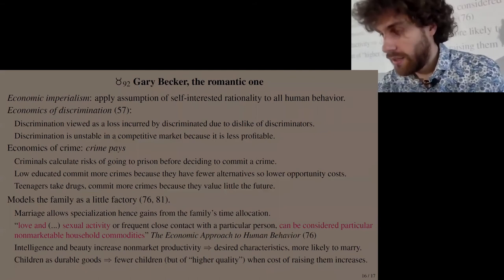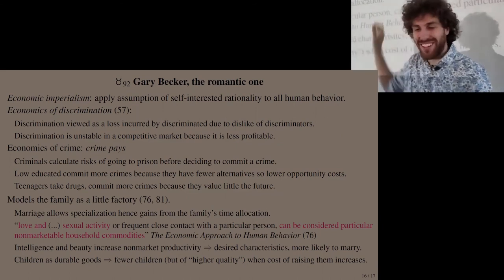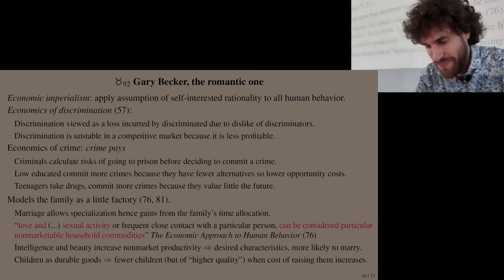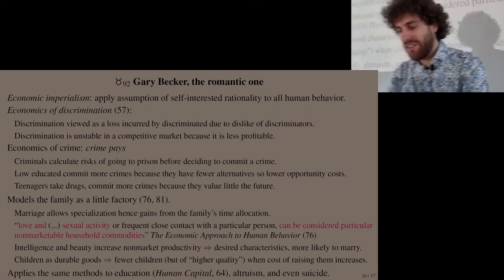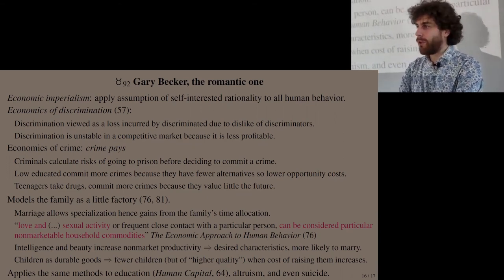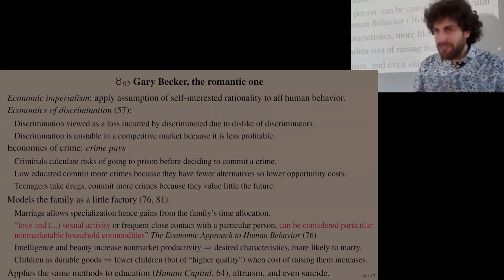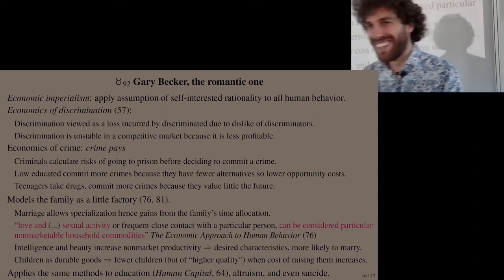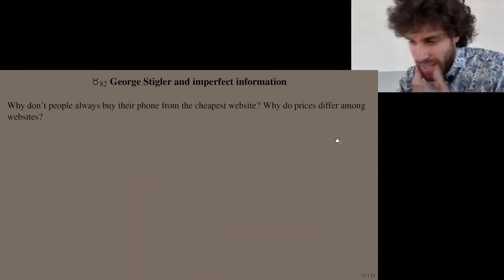A student asks: what did Becker specifically get the Nobel Prize for? He got it for all of this together — the economics of discrimination, crime, the family, education, altruism, and even suicide. A warning: if in your cost-benefit analysis you find that the benefit of killing yourself outweighs the cost, please double-check your computation before you do it.